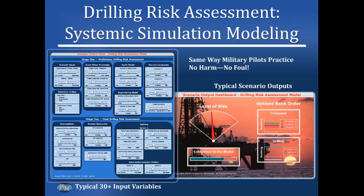This is an example that's in the demo itself, but I want to show you that on the left there are more than 30 input variables — a lot of different things to manage, with many sensitivities and relationships among those variables. On the right side, we look at a typical output where we're looking at the level of risk, a confidence set model, as well as a rank order of the service companies and the drilling program we're going to use. This is very similar to the way military pilots and commercial pilots train in simulators, where the worst-case scenario is we just hit reset, but it enables us to look at a number of different solutions and see what the best one might be.